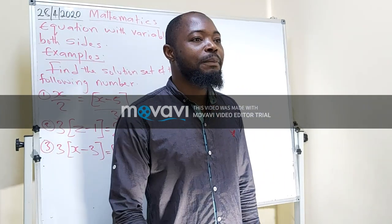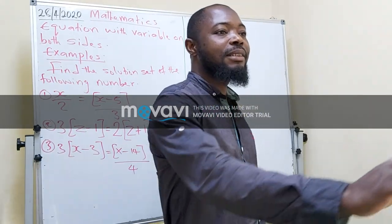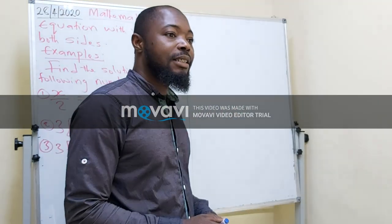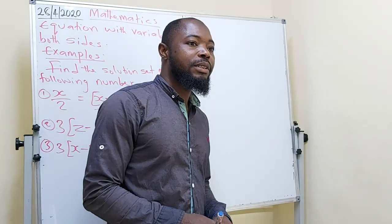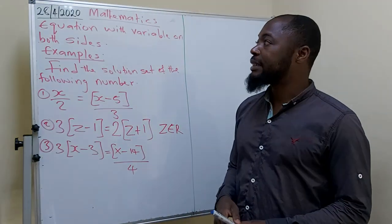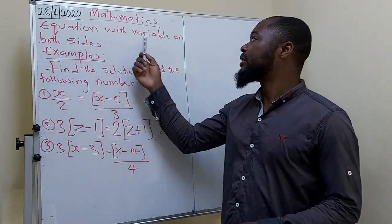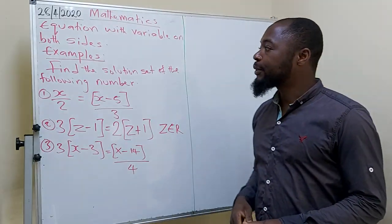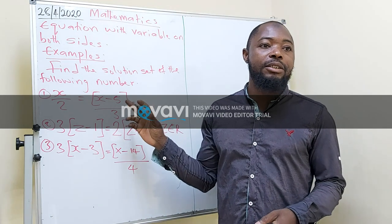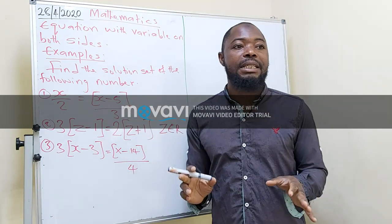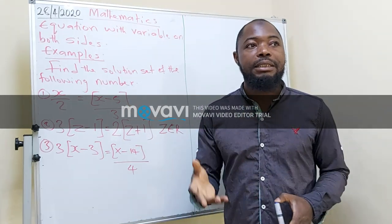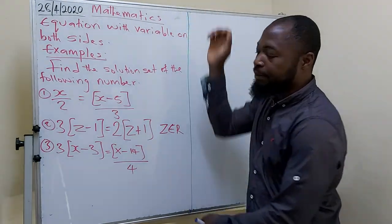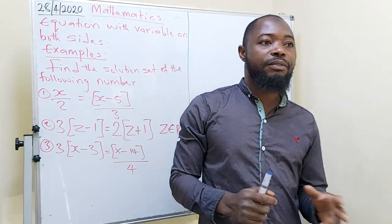Good afternoon, my students. Welcome again. This is Teacher Tanyudin. We have to continue mathematics again. Last time, we talked about equations with variables on both sides. Today we continue, and we have to end this topic today. This is going to be the last day of this topic. The next lesson will be another topic. So now, let's continue from here.